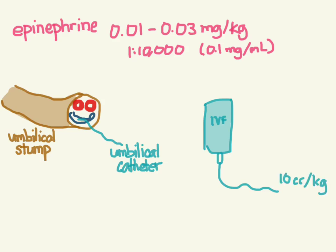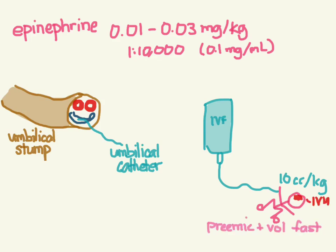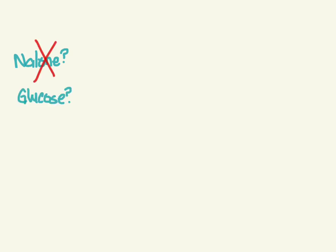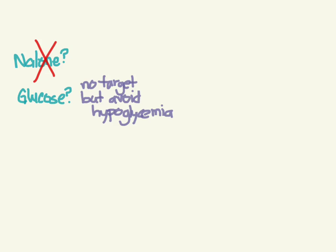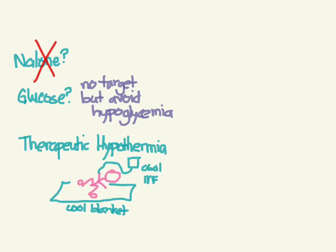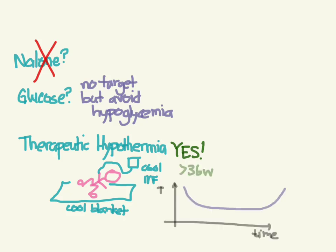Be cautious in premature infants: rapid infusion of large volumes can lead to intraventricular hemorrhage. Regarding other medications: naloxone has not been shown to help. For glucose, there's no specific target but avoid hypoglycemia.